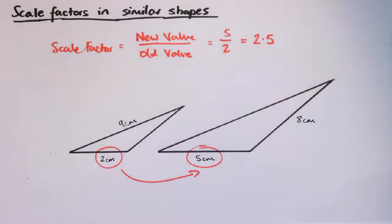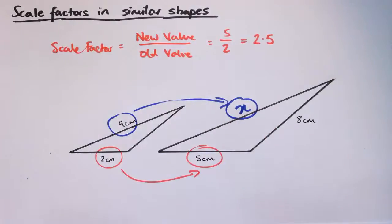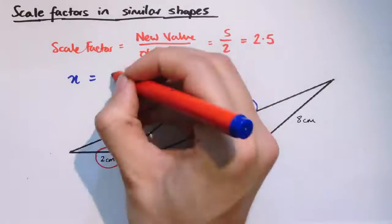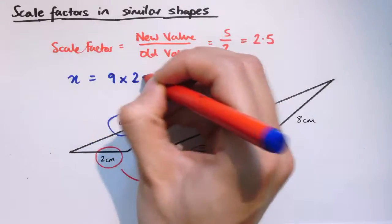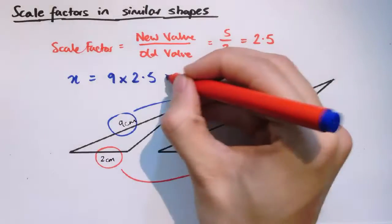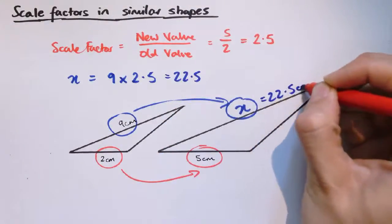Let's say I wanted to work out the length of this side, x. Well, I could just apply that same scale factor from here to here. And I could say, well, x is equal to nine times 2.5, which is 22.5. So this x here would be 22.5 centimetres.